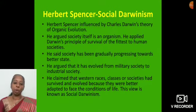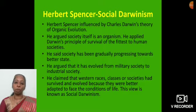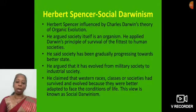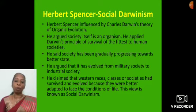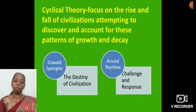Moving to Herbert Spencer's Social Darwinism. Herbert Spencer was influenced by Charles Darwin's theory of organic evolution. He argued that society itself is an organism. He applied Darwin's principle of survival of the fittest to human societies. He said society has been gradually progressing towards a better state and has evolved from military society to industrial society. He claimed that Western races, classes, or societies had survived and evolved because they were better adapted to face the conditions of life. This view is known as social Darwinism.